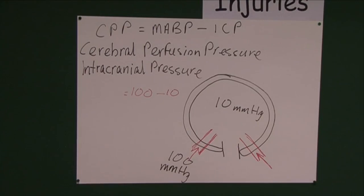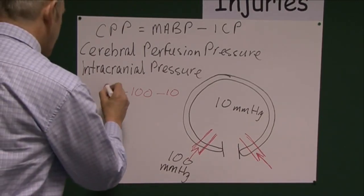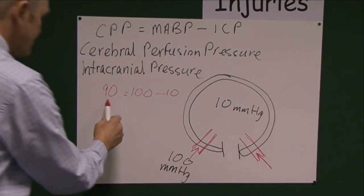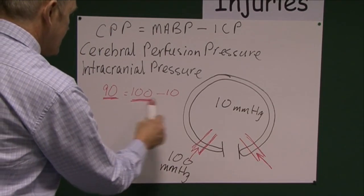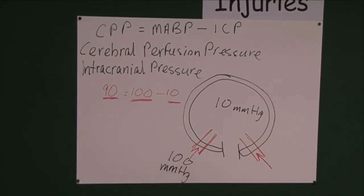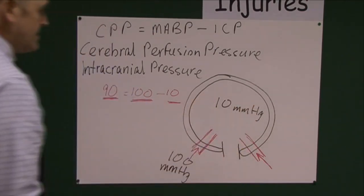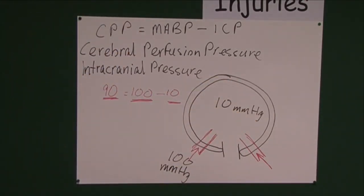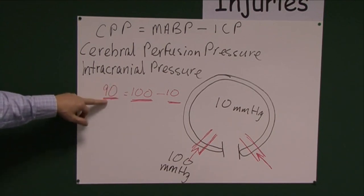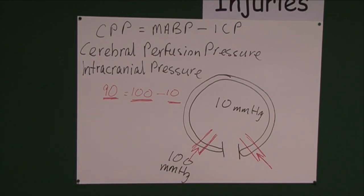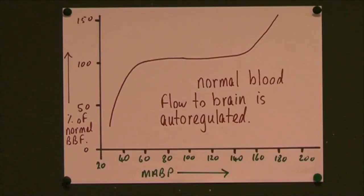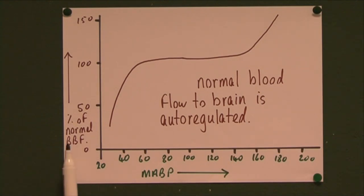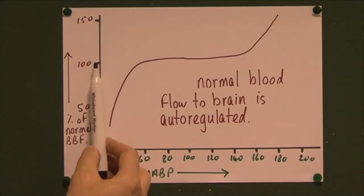The perfusion pressure in the brain vessels is 100 minus 10, giving a cerebral perfusion pressure of 90 mmHg. So CPP equals MABP minus ICP: 90 equals 100 minus 10. This graph shows the physiological situation of brain blood flow — 50% of normal, 100% of normal, and increased levels of blood flow through the brain.